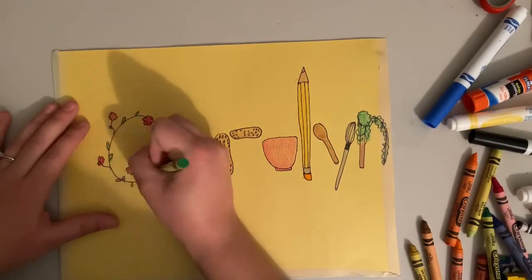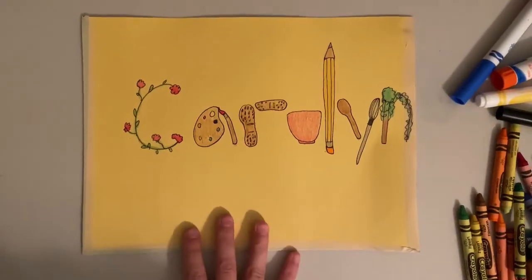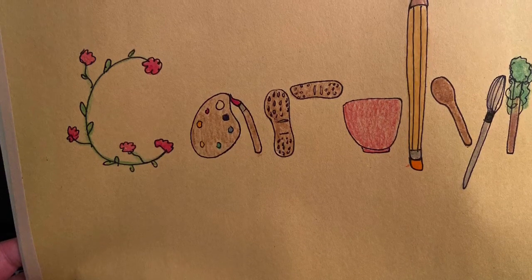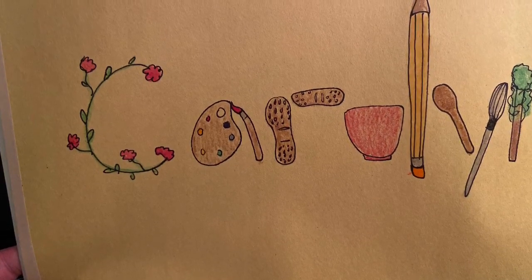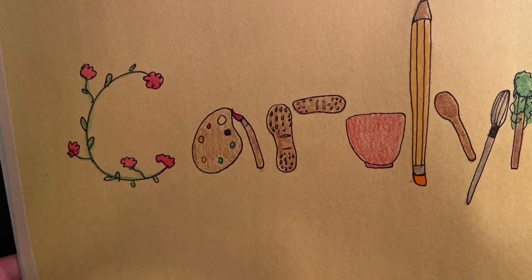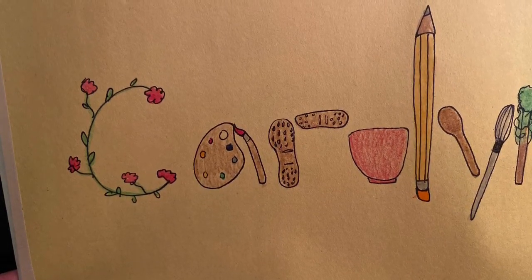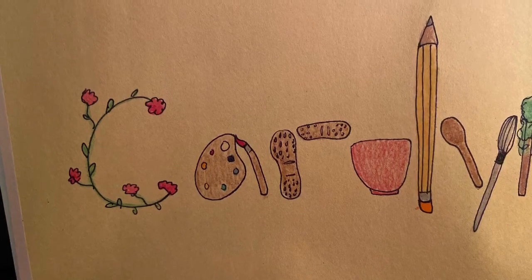If you're done coloring your name, you can design the background and color in the background so it's a little more colorful than a plain piece of paper. Then when you're all done with your art folder, make sure you take a picture of it and post it in Google Classroom so that I can see it. I can't wait to see what you guys come up with for your names.